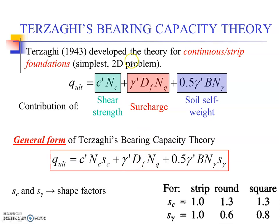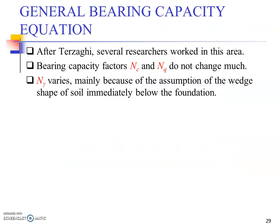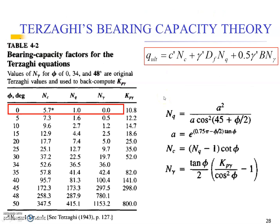For strip foundations, the value of Sc and S-gamma is one each, so putting it in makes it simply the original model for strip foundations. After Terzaghi, several researchers worked in this area and presented modifications. They recomputed the bearing capacity factors Nc and Nq and found they don't change much, but N-gamma varies significantly, mainly because of the assumption of the wedge shape of soil immediately below the foundation.